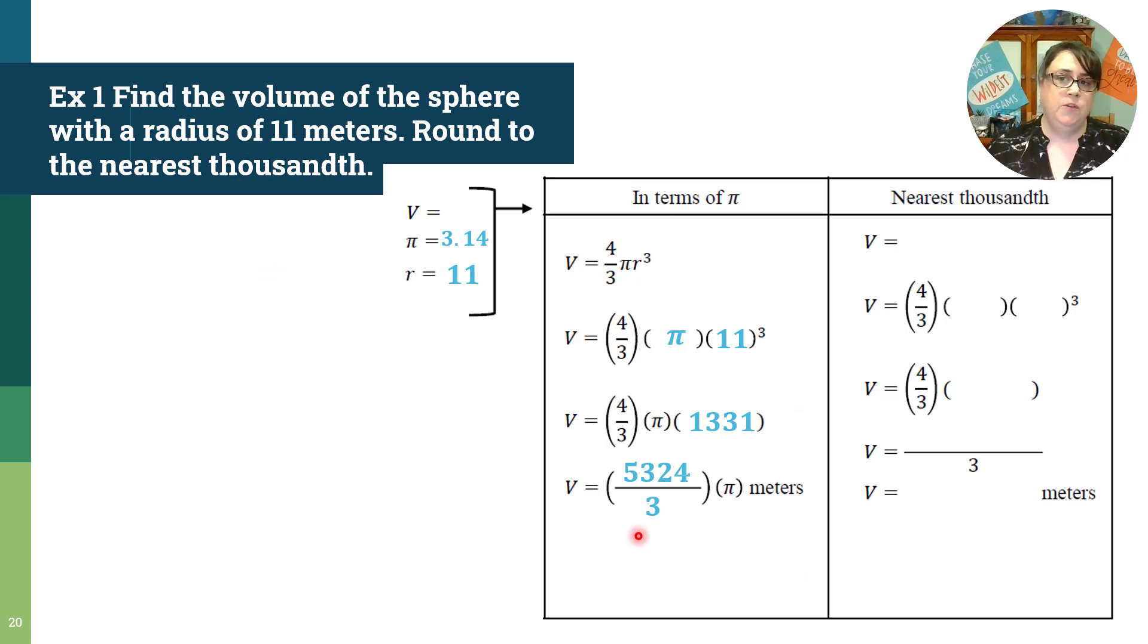But it did say to the nearest thousandth. There's two ways I could continue. I could find this as a decimal and multiply by 3.14, or I could start from the very beginning. Let's start from the beginning. Once you get into multiplication, there's lots of different ways because multiplication I can do in any order.